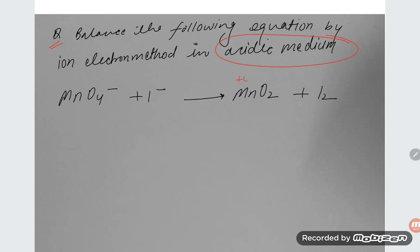Looking at the oxidation numbers: in MnO2, manganese has oxidation number +4; iodine in the free state (I2) is 0; iodide (I⁻) is -1; and in MnO4⁻, manganese is +7.